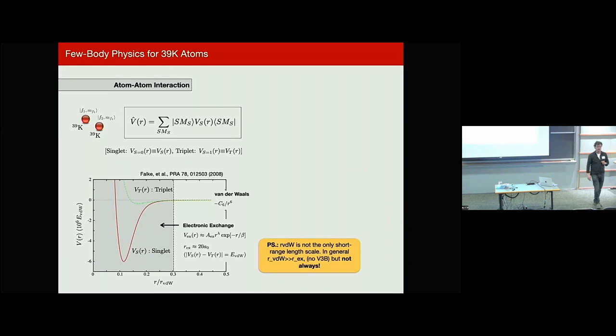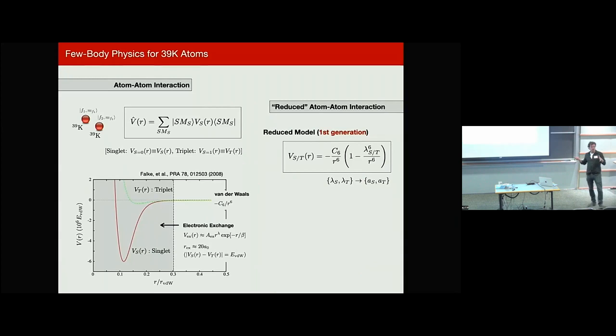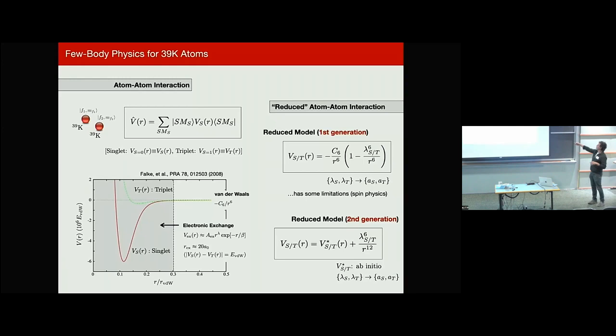You can see these potentials are very well calculated and refined by feedback from experiments. And one point that I want to make right now for this talk is that the van der Waals length, which is related to the detail of this potential, is not the only length scale relevant to the few-body problem. We also have what I'm calling the exchange radius, which is when the energy between the singlet and triplet potentials is comparable to the van der Waals energy. And that gives you a length scale that tells you more or less when the electronic clouds are starting to feel each other.